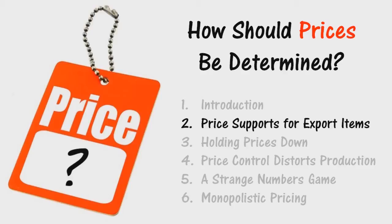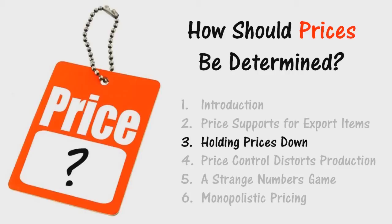These attempts to stabilize or raise prices of primary agricultural products politicize every price and production decision and create friction among nations. Now let us turn to governmental efforts to lower prices or at least keep them from rising. These efforts occur repeatedly in most nations not only in wartime but in any time of inflation. The typical process is this: the government follows policies that increase the quantity of money and credit, which inevitably starts pushing up prices, but this is not popular with consumers, so the government promises to hold the line against future price increases.